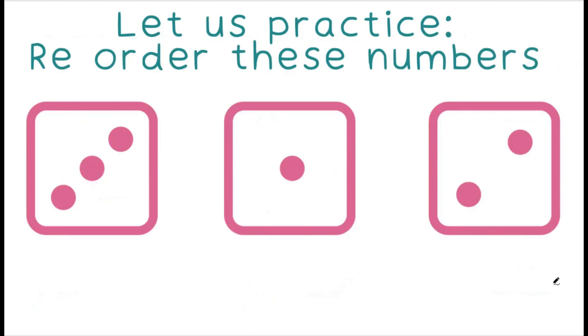Let us practice, reorder these numbers. Here we have three die spaces. Each space has a number. Our first die space has the number 3. Our second die space has the number 1. And our third die space has the number 2. Which one do you think should be first?